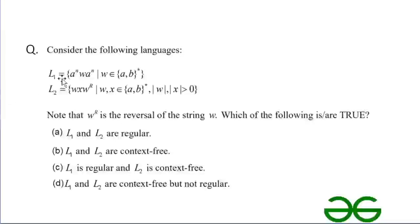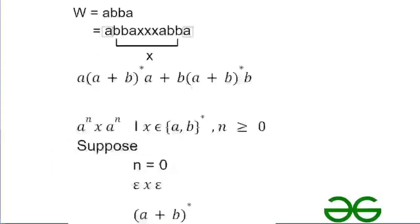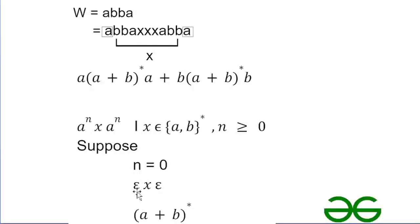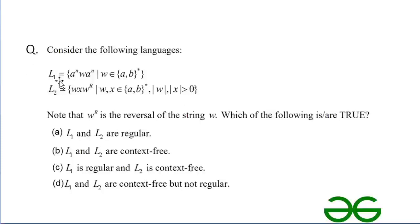Now let's consider L1 = a^n w a^n where w belongs to {a,b}*. Taking n = 0 (since n ≥ 0), the input string becomes epsilon w epsilon, and w can be any combination of a and b. So its regular expression is (a+b)*, and we can construct a finite automaton for L1. Hence L1 is also a regular language.